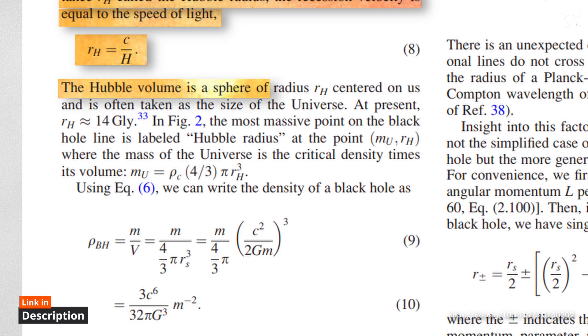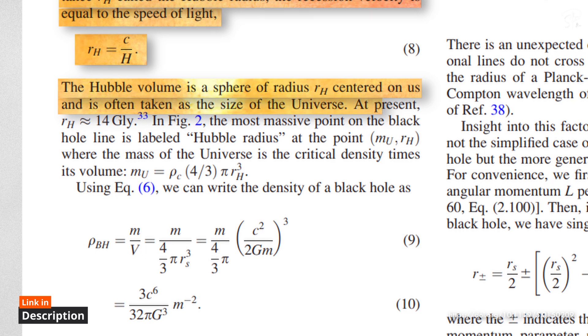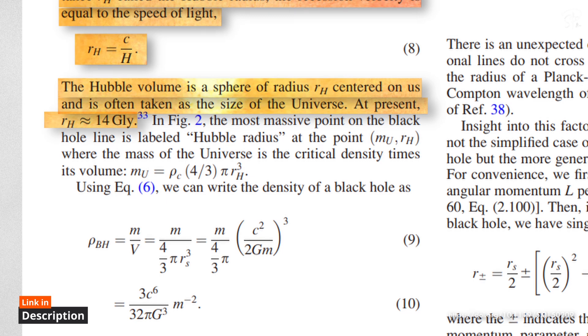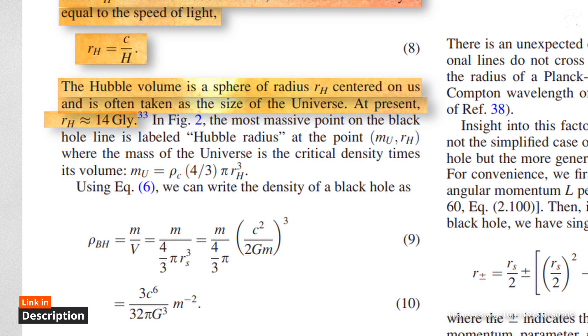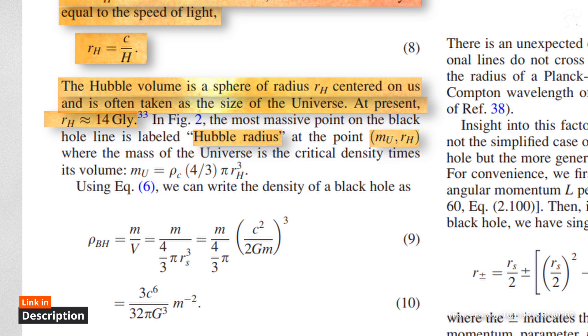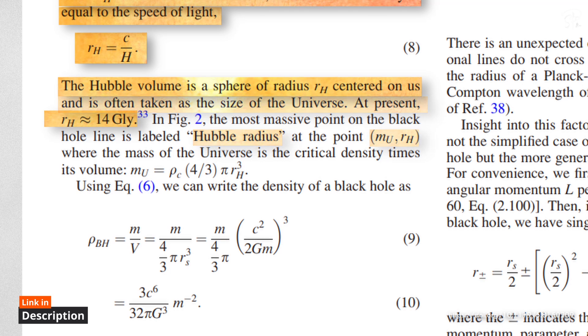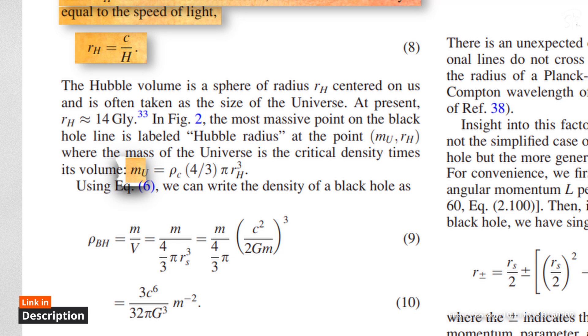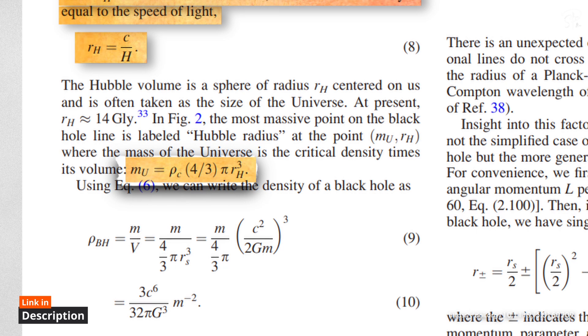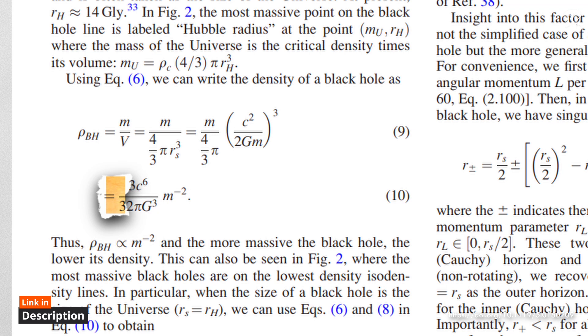The Hubble volume is a sphere of radius RH centered on us and is often taken as the size of the universe. At present RH is nearly 14 DLY or 14 Giga light year. A Giga light year is a unit of distance used in astronomy. It is equal to 1 billion light years. And the most massive point on the black hole line is Hubble radius at the point MU RH where the mass of the universe is critical density times its volume. So, from all the previous equations,